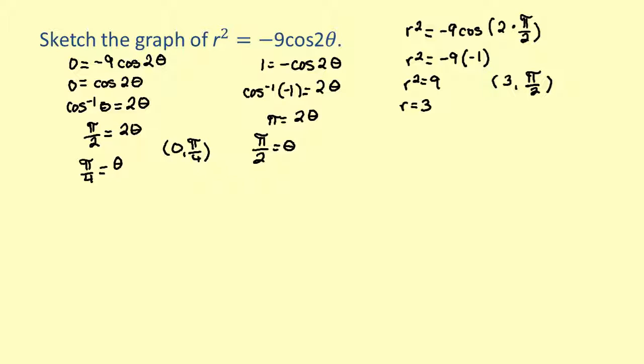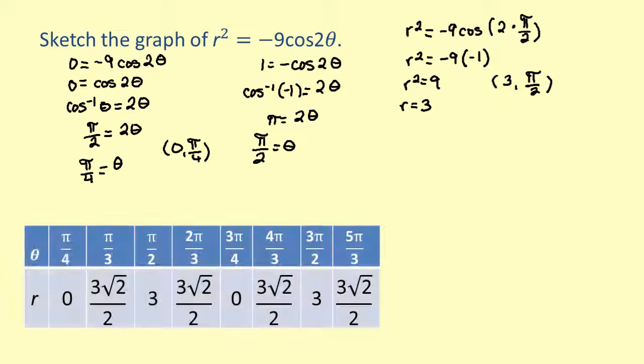Continue to create a table with other values that lie on the curve. Finally, we plot the points and draw the lemniscate.